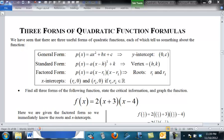The general form, P of X equals AX squared plus BX plus C, tells us the Y-intercept, 0C. The standard form, P of X equals A times X minus H squared plus K, tells us the vertex, HK.